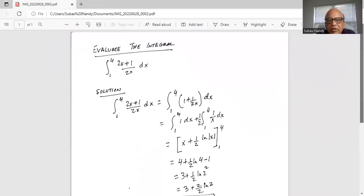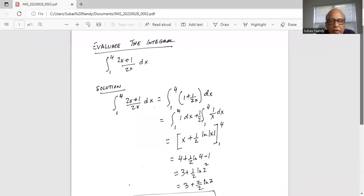Evaluate the integral. The limits are between 1 and 4, 2x plus 1 over 2x dx. We can write that as integration from 1 to 4 of (2x+1) divided by 2x. We get 2x divided by 2x is 1 plus 1 over 2x dx.